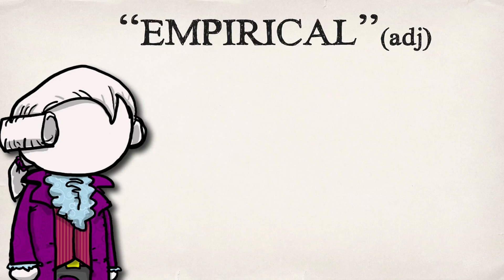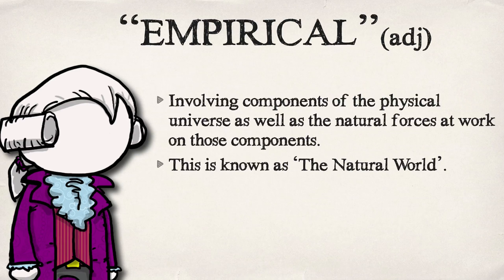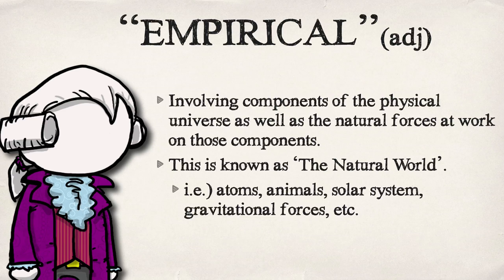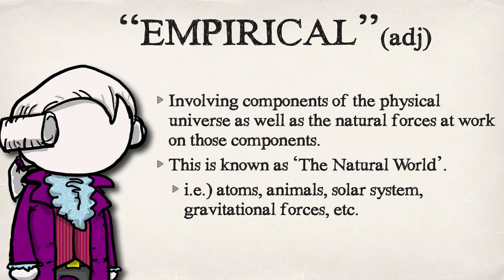One of the first terms in science is the idea of empirical. Empirical simply means involving the things of the physical universe and the forces that work on those components. In science, this is known as the natural world — anything you've ever studied in science class, from animals to atoms, to the solar system, to the forces themselves, physics, all that stuff. This is all the natural world as opposed to the supernatural world.